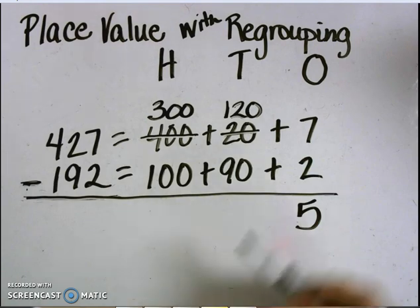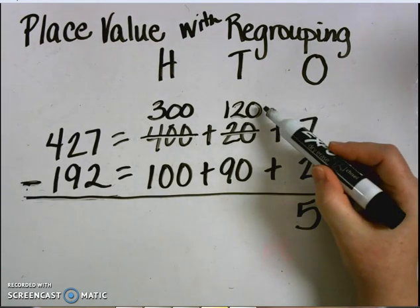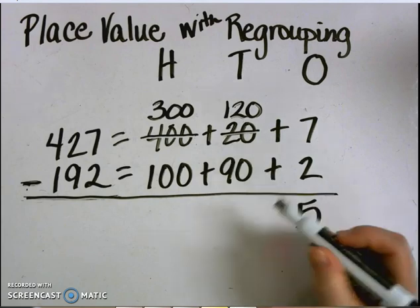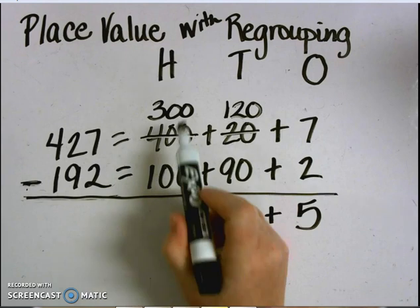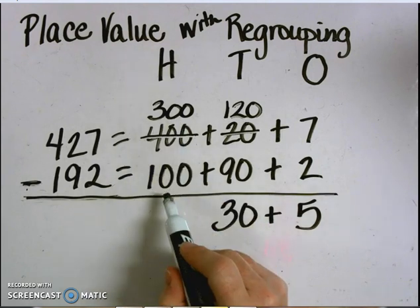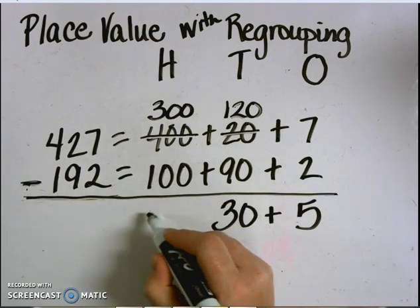I can now subtract 120 subtract 90, which equals 30. 300 subtract 100 equals 200.